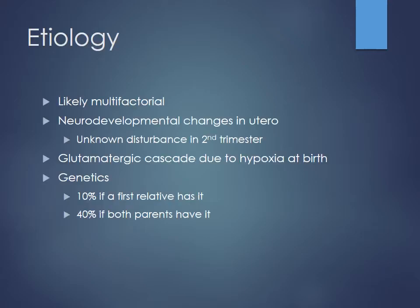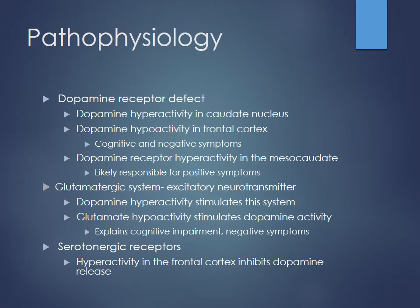Moving on to antipsychotics — this is a big group of medications and it's good to have a solid understanding of them. Schizophrenia is probably multifactorial in origin. There may be changes that occur in utero, including maternal exposure to substances, glutamate cascades due to hypoxia at birth, and certainly a genetic component — if both parents have schizophrenia, you're more likely to have it as well.